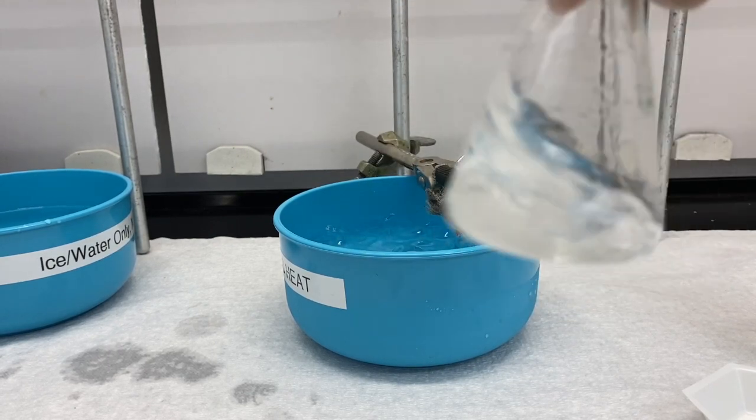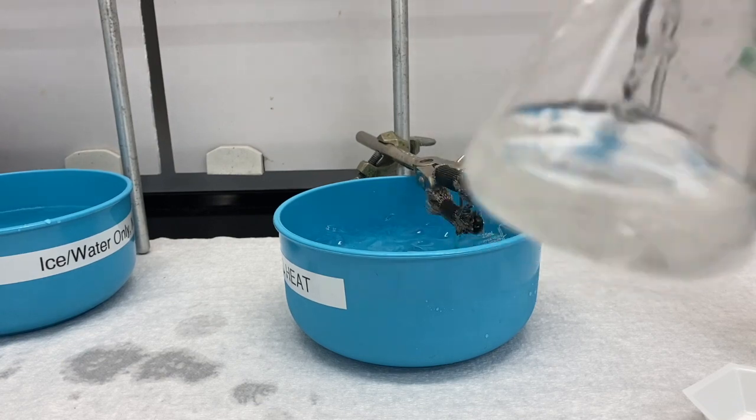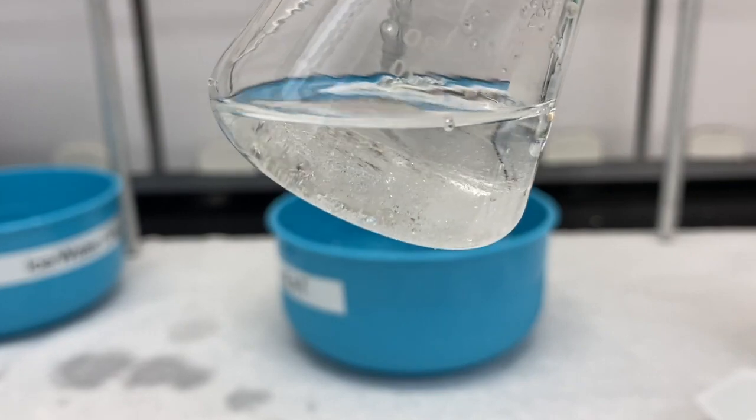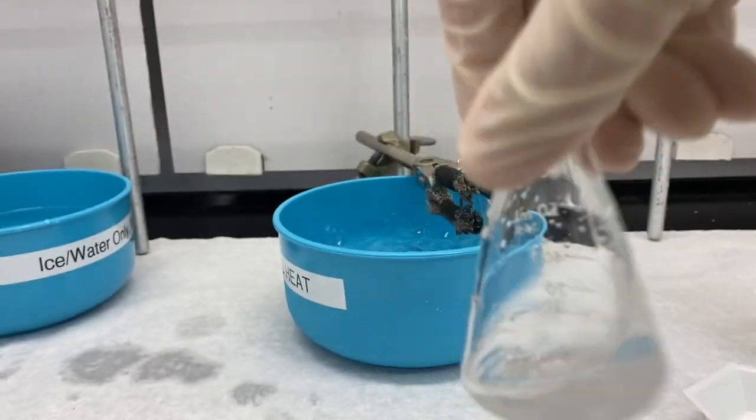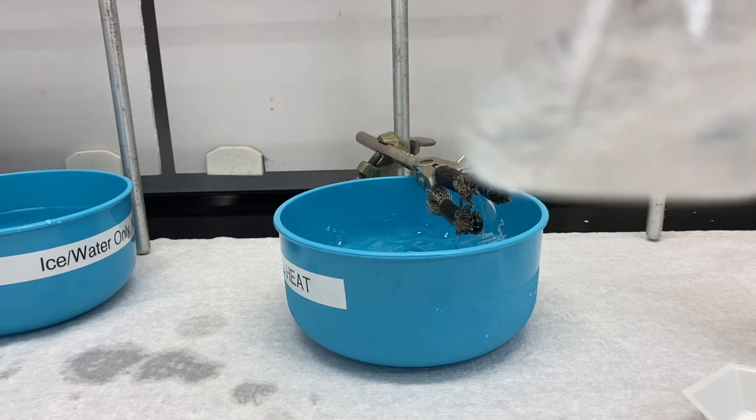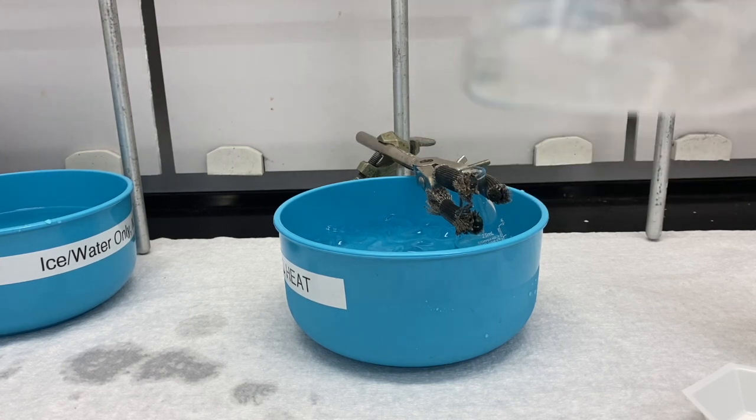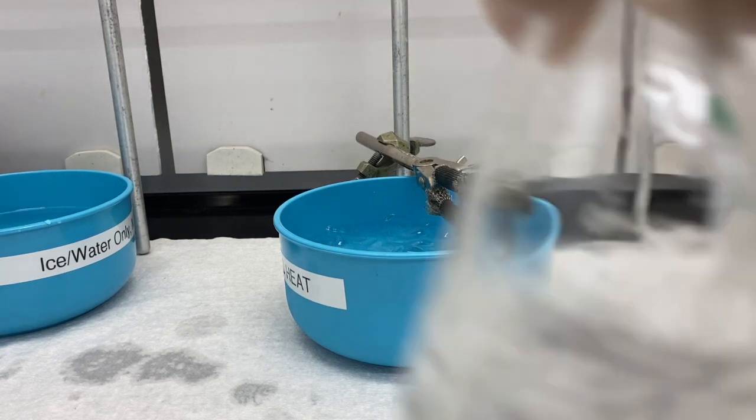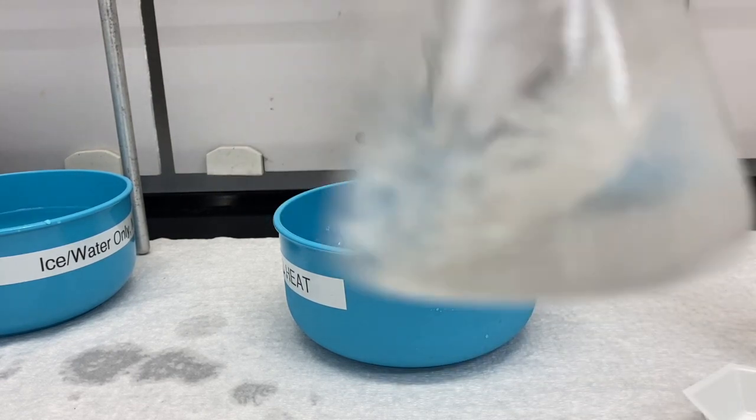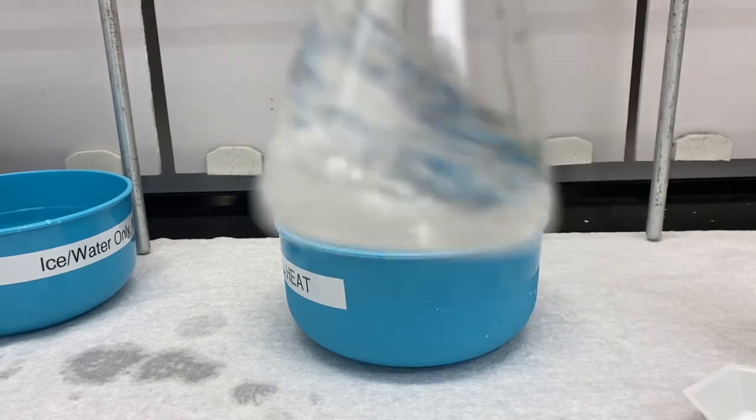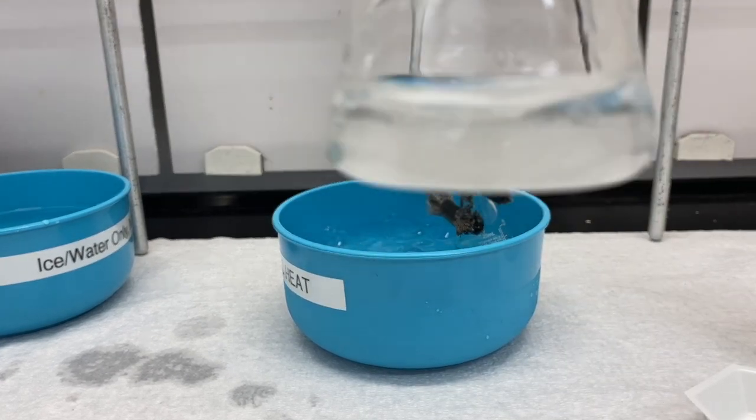All right, so I'm just going to keep swirling this until most of the solid dissolves. So we want the solid to go away so that our 1,4-dimethoxybenzene is actually in the solution so it can react. So we'll come back here in a second. Once it's all dissolved, you don't need to see me shake stuff for a few minutes.